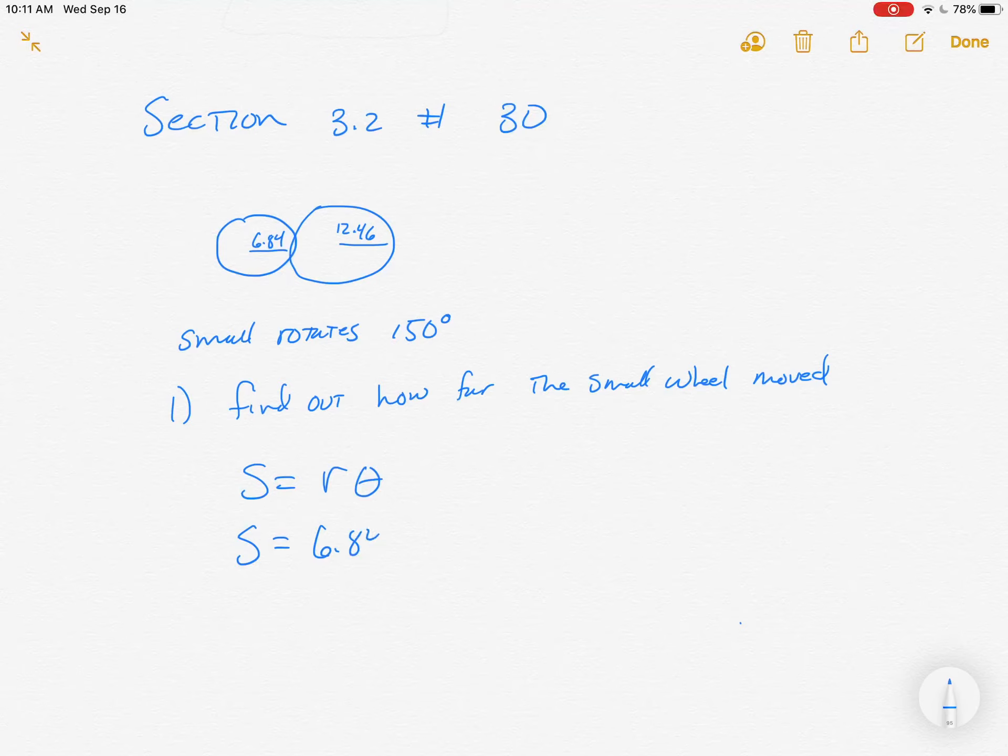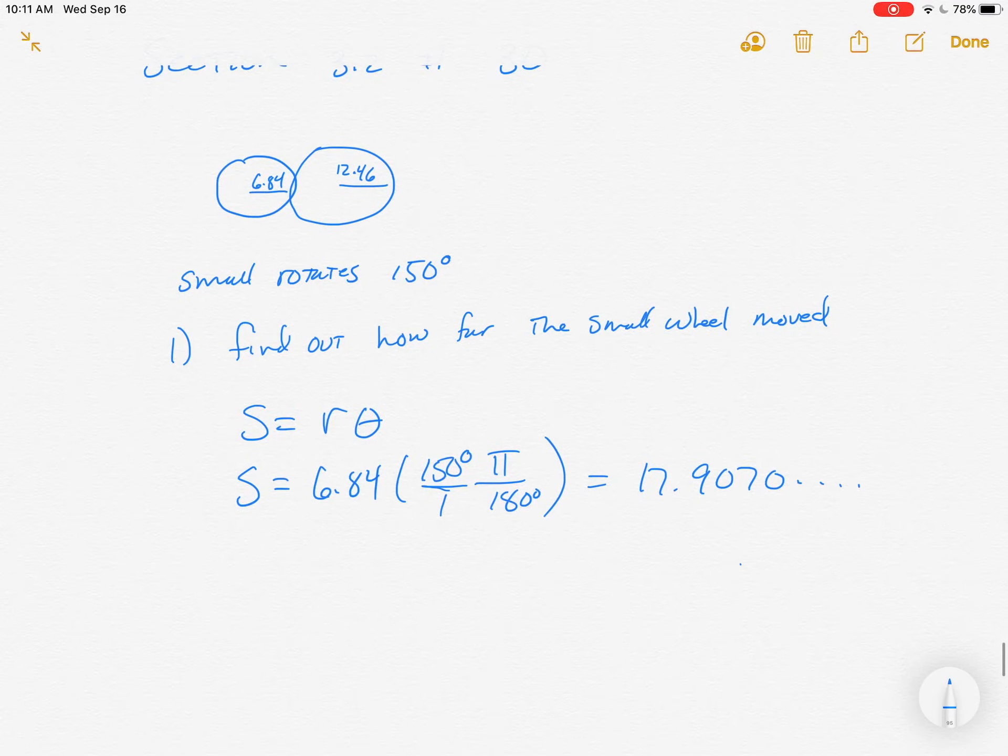S is equal to 6.84 because that's the small wheel. It's rotated 150 degrees, but if you multiply by 150, you're going to be way off because you need to have radians in here. So make sure you convert. I would just take on my calculator 6.84, multiply by 150, multiply by pi, and divide by 180, and we get the number 17.9070, and it just keeps going. So I'm going to leave that number in my calculator.